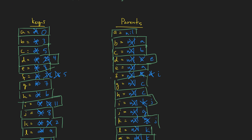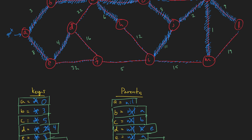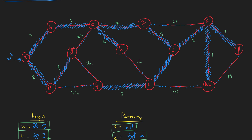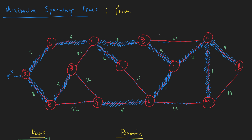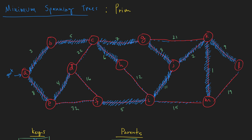F looks like the last one in our priority queue, so we add it to the tree, hoping we have a minimum spanning tree. Adding F completes our minimum spanning tree from Prim's algorithm. We also did Kruskal's algorithm on the same graph — comparing them, it looks like we have the exact same tree. They both found the minimum spanning tree. They don't always find the exact same tree, but they happened to in this example.